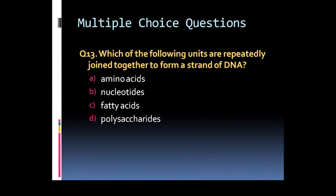Question 13: Which of the following units are repeatedly joined together to form a strand of DNA? Option A: amino acids. Option B: nucleotides. Option C: fatty acids. Or option D: polysaccharides.